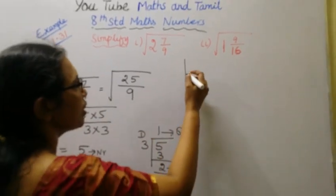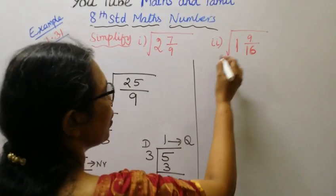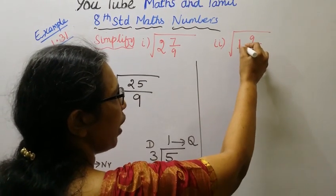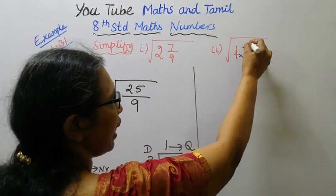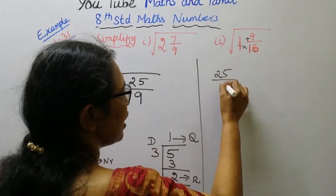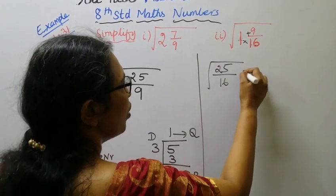Okay, 2nd subdivision: 1 9/16. 1 into 16 is 16, 16 plus 9 is 25. 25 by 16.